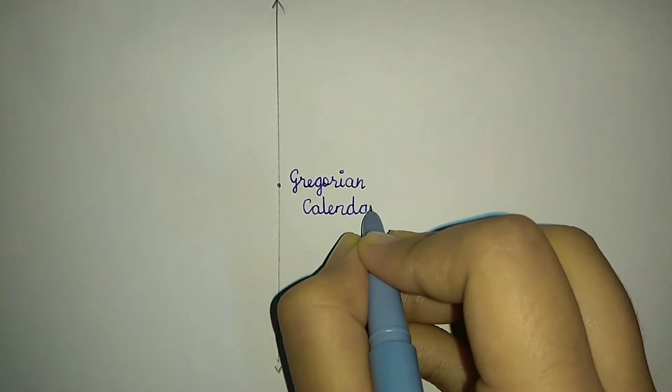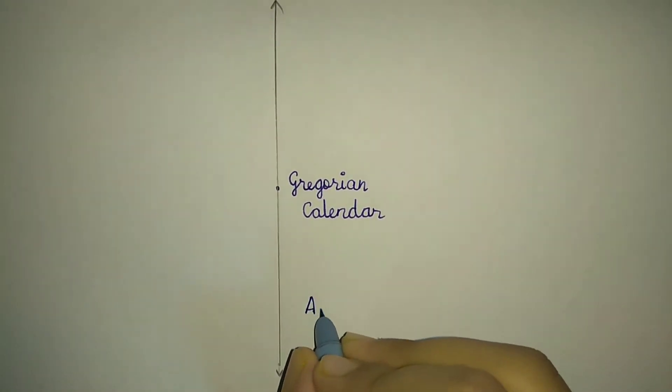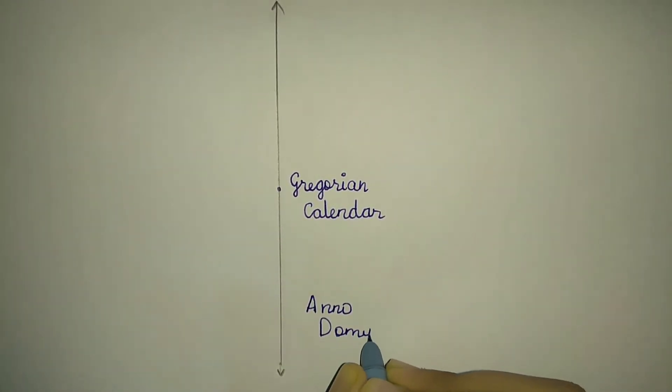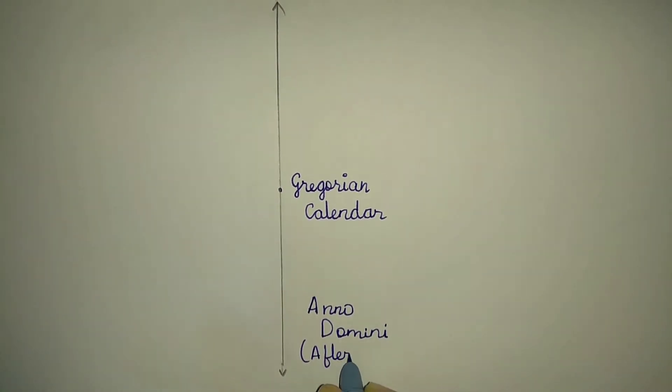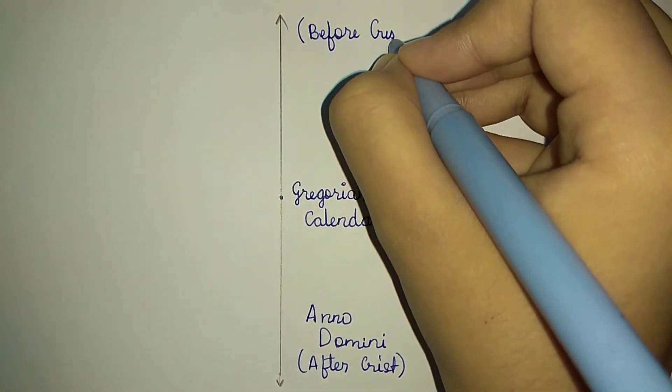Here we start. I'll draw a vertical line showing how to calculate from the present year, which is 2021. In the middle of the line, we'll mark a point representing the current calendar we use, the Gregorian calendar.